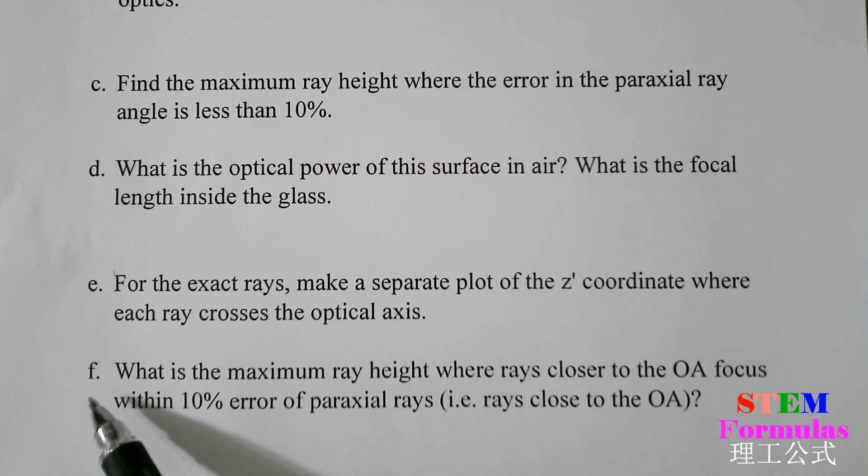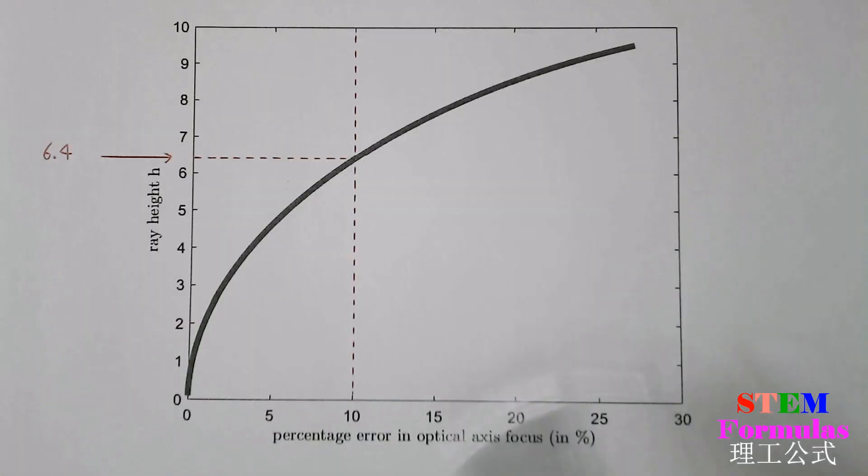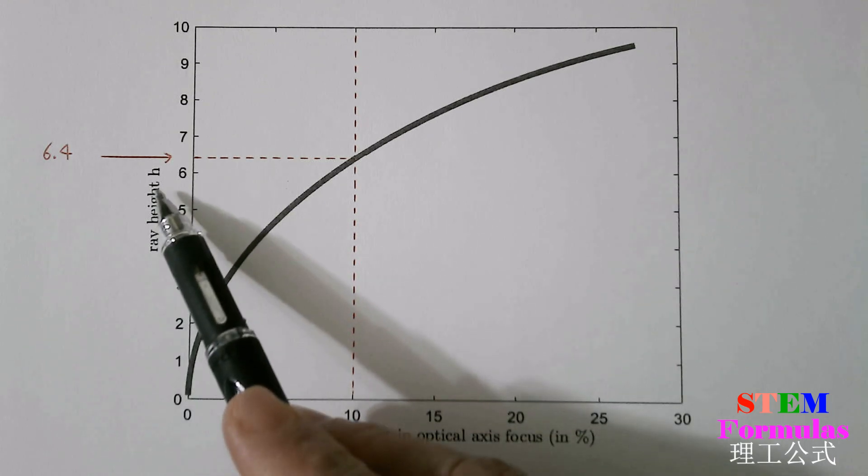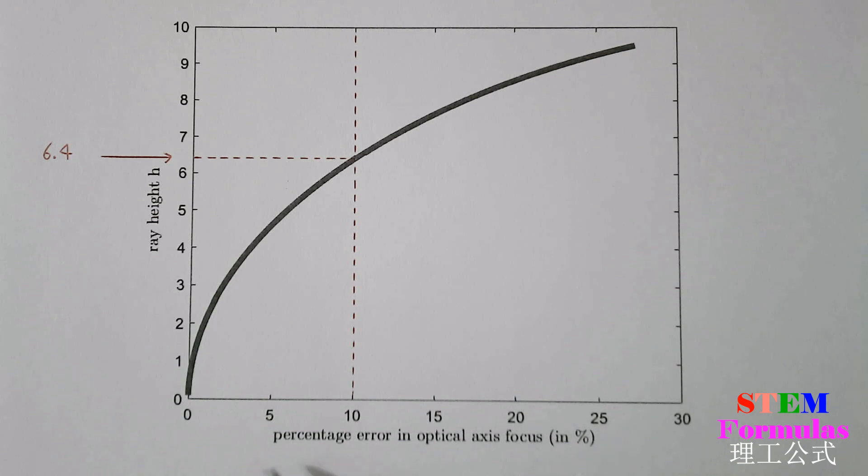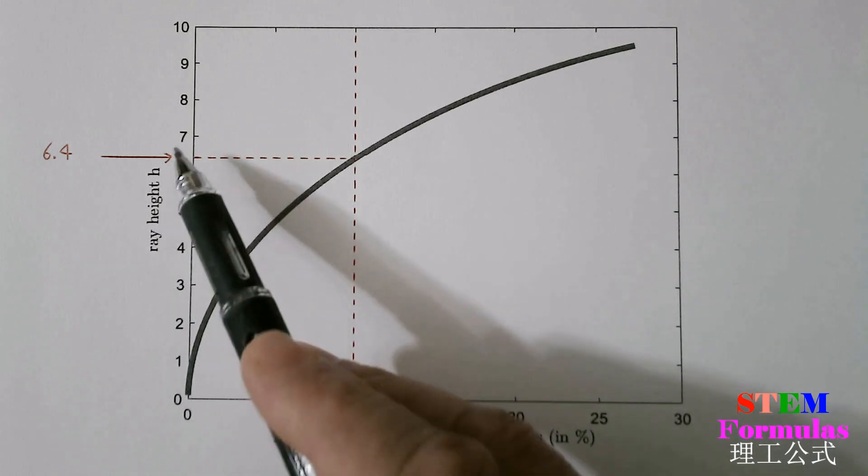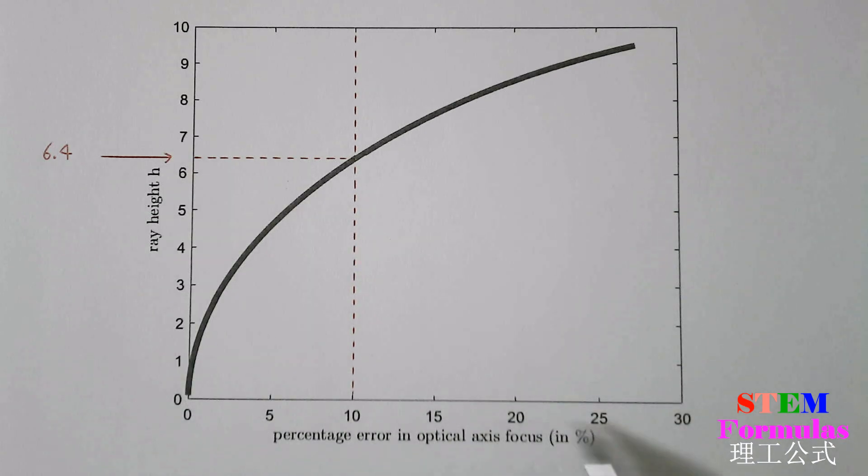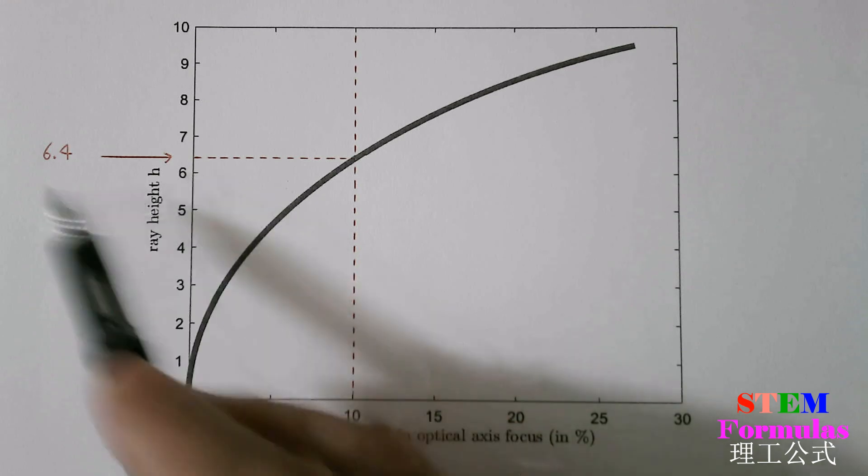Question F: This is the answer for question F. The vertical axis is for ray height h. The horizontal is percentage error in optical axis focus, in percentage. As the ray height h increases, the percentage error also increases. If we require the percentage error is within 10%, we found that the ray height must be smaller than 6.4 cm.